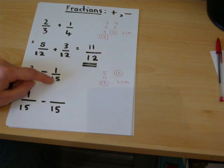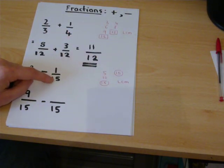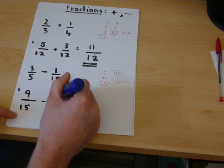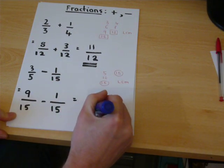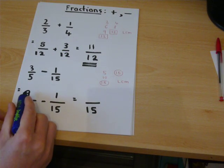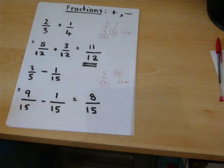The bottom of this fraction only occurred once. So we times the top by 1. 1 times 1 is 1. We keep the same denominator. And 9 take away 1 is 8 fifteenths.